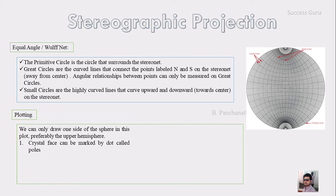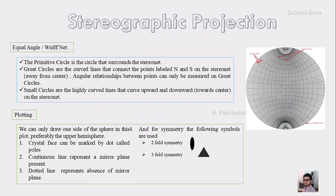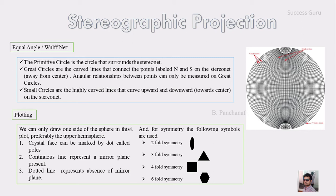The crystal face can be marked by a dot, and that dot is called the pole. A continuous line on this projection represents the presence of a mirror plane, and a dotted line represents the absence of a mirror plane. For symmetry, there are symbols: the two-fold symmetry looks like a lens, three-fold symmetry looks like a triangle, four-fold symmetry looks like a square, and six-fold symmetry looks like a hexagon.